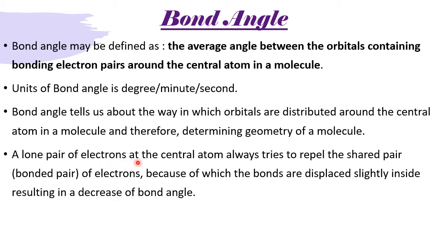A lone pair of electrons at the central atom always tries to repel the shared pair or the bonded pair of electrons, because of which the bonds are displaced slightly inside, resulting in a decrease of bond angle. In this point, somewhere I cleared, in a molecule, if all are bond pair, it is having least energy. If in a molecule, along with the bond pair, lone pair is there, so lone pair is free, so it will create some problem. Which problem? Repulsion problem.